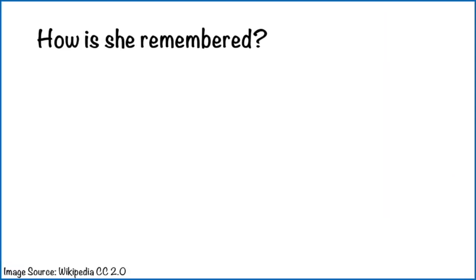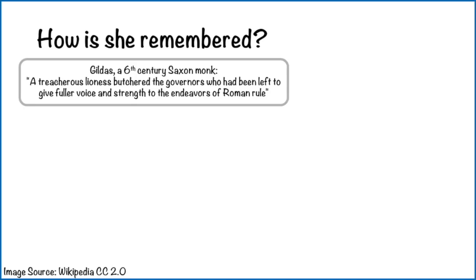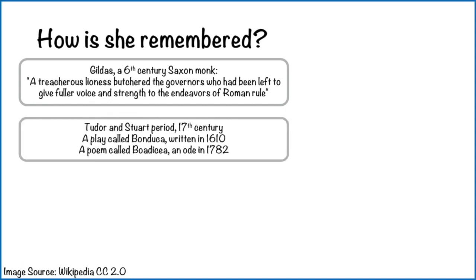How is she remembered? Very few people know about Cartimandua, but I'm confident more of you will have heard of Boudicca. Let's look at how she has been remembered through history, because it does change. Gildas, a 6th-century Saxon monk, described her as a 'treacherous lioness' who 'butchered the governors who had been left to give fuller voice and strength to the endeavours of Roman rule' — he wasn't a fan, and seems to have a very pro-Roman point of view. In the Tudor and Stuart period — the 16th, 17th and into the 18th centuries — a play was written called Bonduca and a poem called Boadicea: An Ode, so she was being remembered.